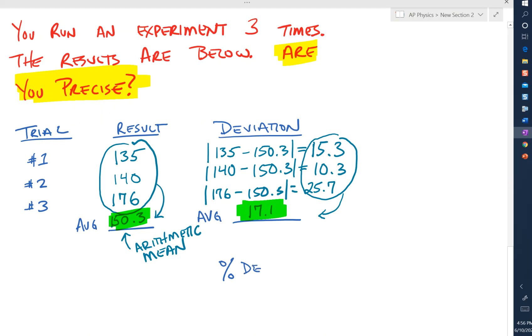Percent deviation equals the average of all the deviations—so 17.1—divided by the average of all the experimental values or the arithmetic mean or the average of all the results. That's 150.3, times it by 100 percent to turn it into a percent.